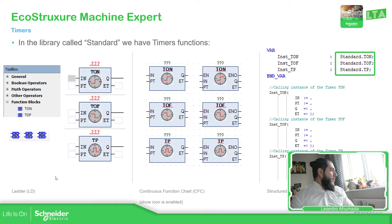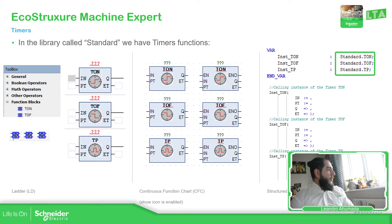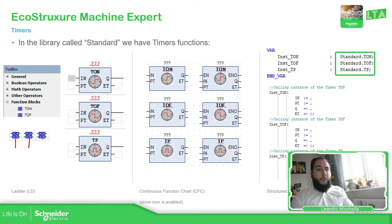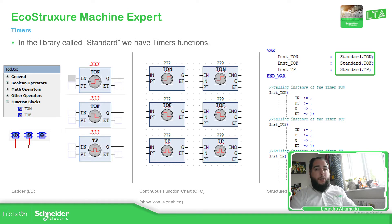We have three different timers. We have the T_ON — delay on timer, or on delay timer — off delay timer, and timer pulse, which generates a pulse. The names are T_ON, T_OFF, and T_P, and you can use them with an enable input and an enable output.